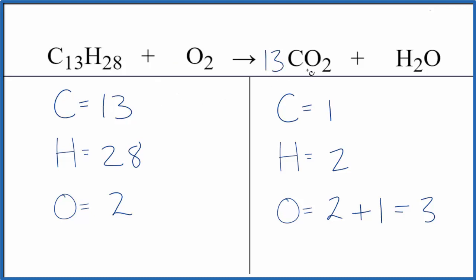Let's put 13 carbons. So 1 times 13, that's 13. And then for oxygens, let's update those. So we have 13 times 2, that's 26, plus we have the 1 here. That gives us 27 oxygen atoms.